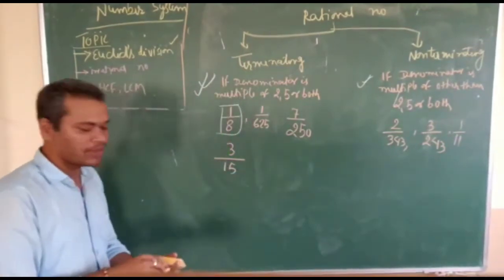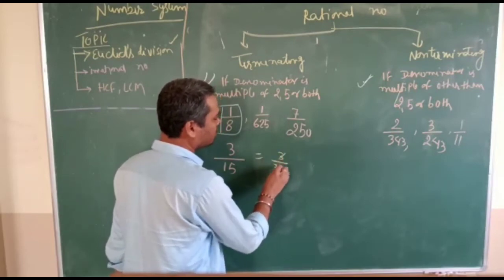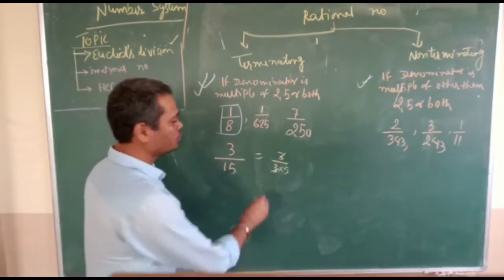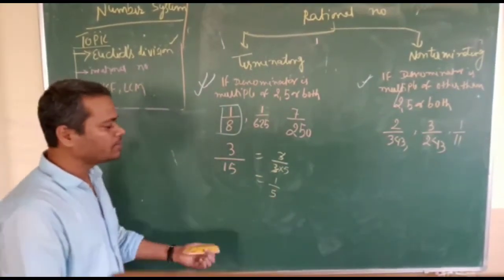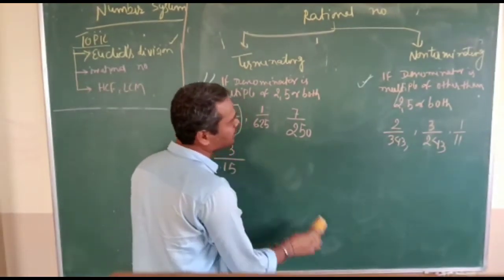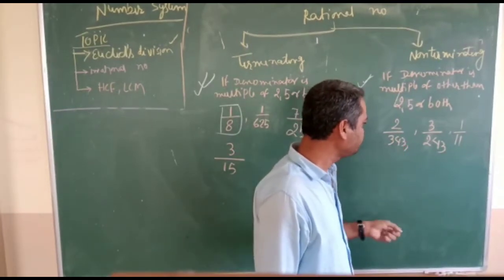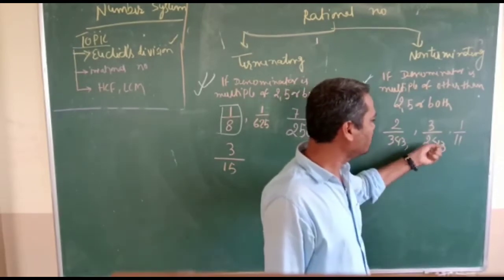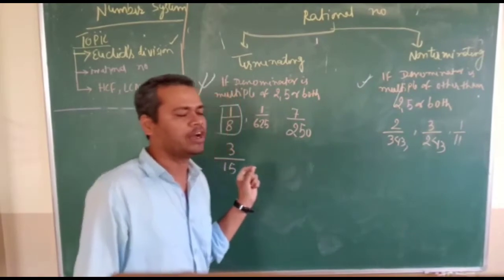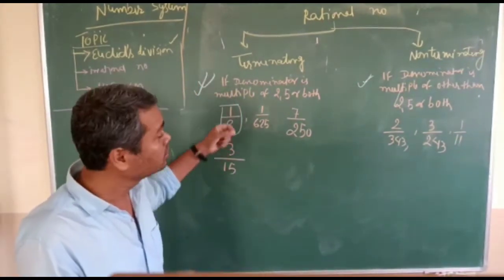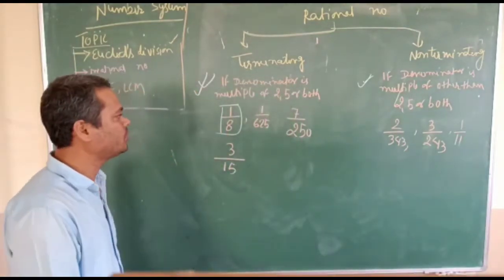What about 3/15? See, 3/15 = 3/(3 × 5), but 3 and 3 cancel out, so we are left with only 1/5. The denominator is only a factor of 5, which means it is terminating. For non-terminating cases, if the denominator is a multiple of 3, or a multiple of 11, as I said, if the denominator is only a multiple of 2, 5, or both, it is terminating; otherwise it will be non-terminating.